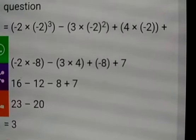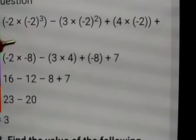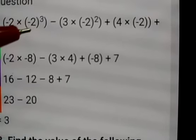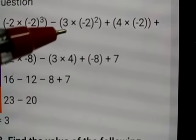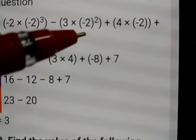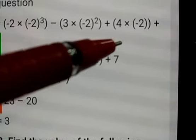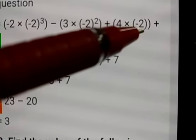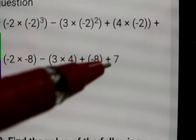Wherever p is there we have to substitute it as minus 2. So minus 2 into minus 2 to the power of 3. Then again minus 3 — in the place of p I am taking minus 2 — and the square is as it is. Then plus 4, and in the place of p I have taken minus 2, plus 7 as it is.